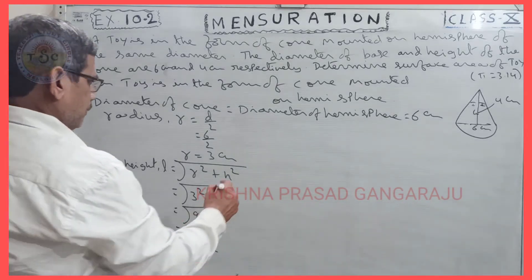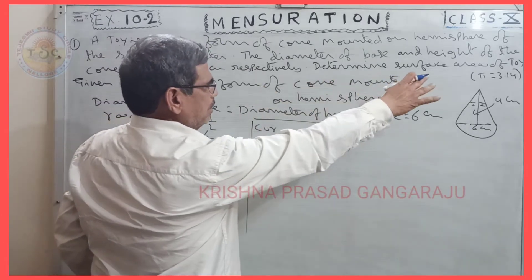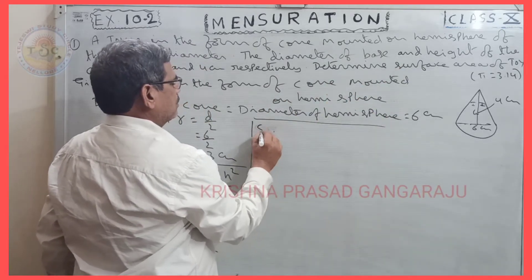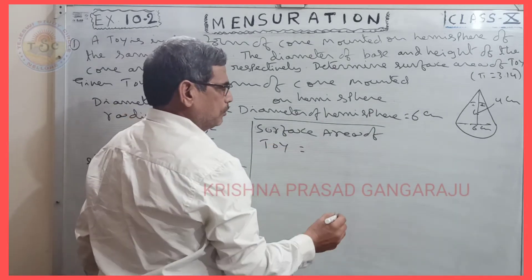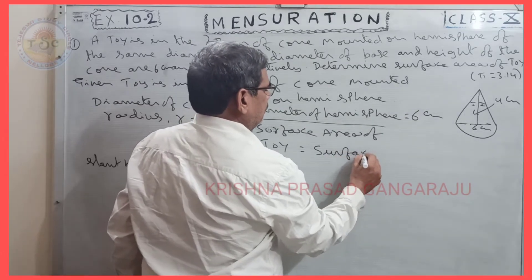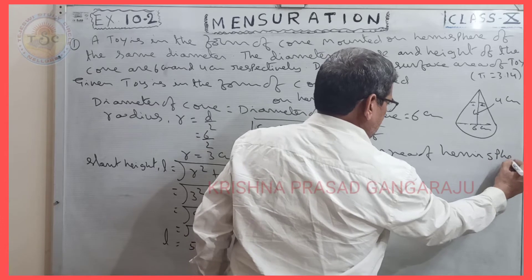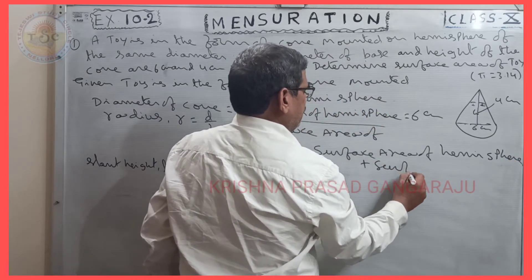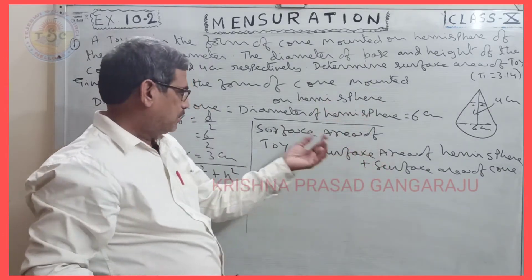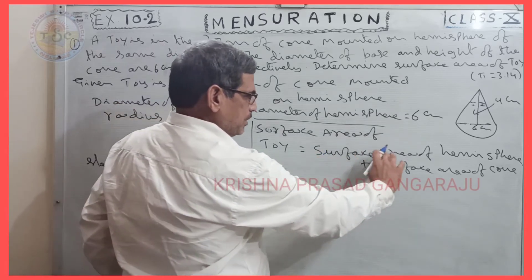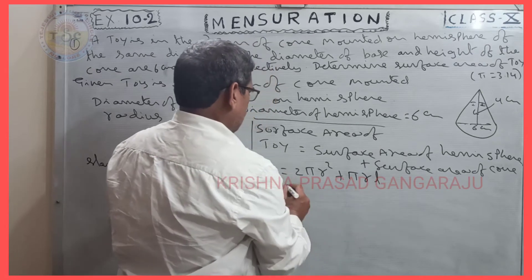So slant height is given. Total surface area of tie is equal to surface area of hemisphere plus surface area of cone. Surface area of hemisphere is 2 pi r square. Surface area of cone is pi r l.